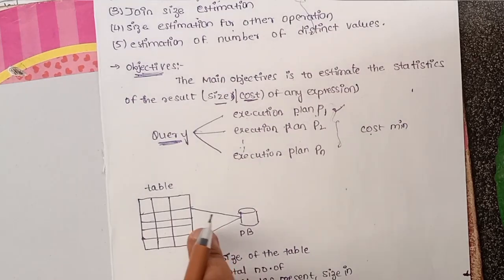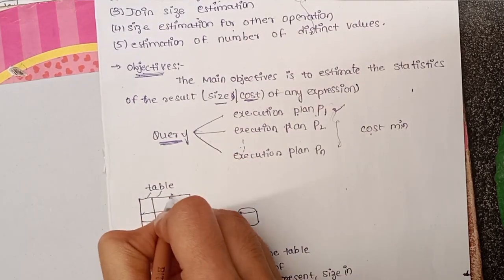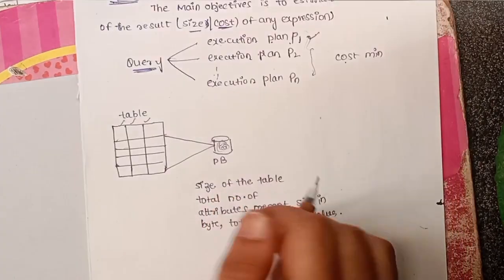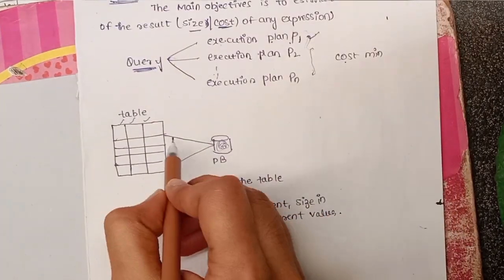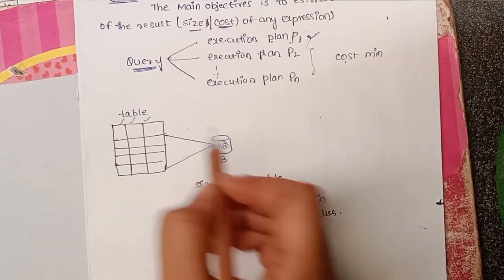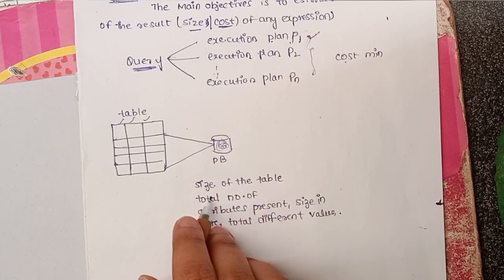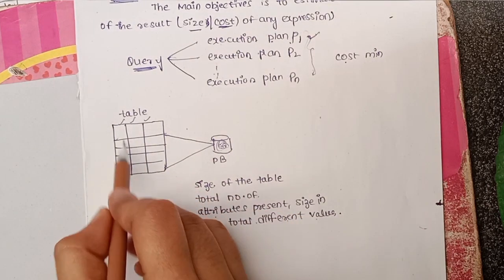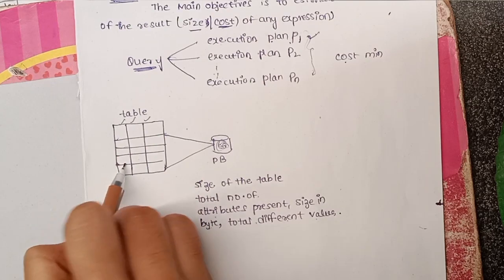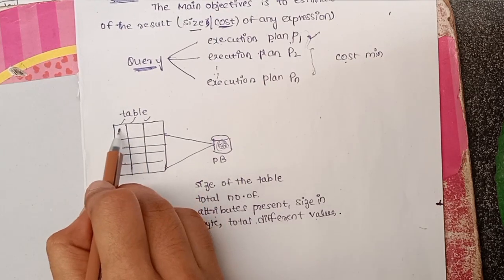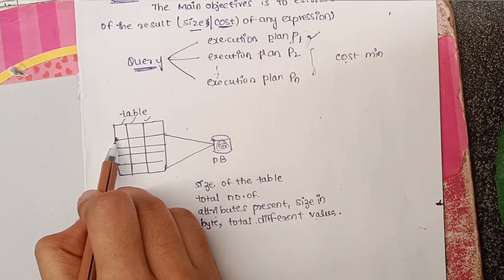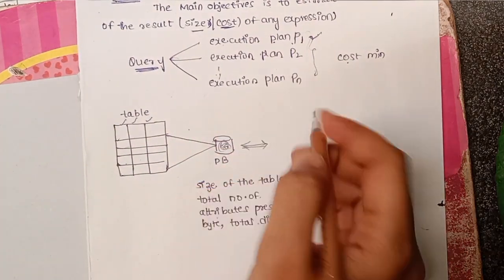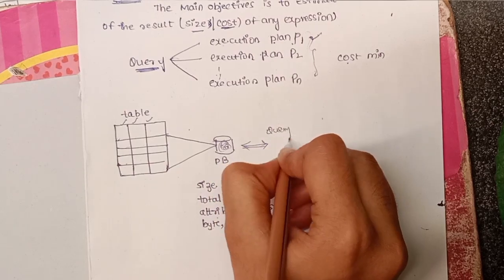There is one table with some attributes, all stored in a database. The database stores statistics of a relation, for example: size of the table, total number of attributes present, size in bytes, total distinct values, and size of the attributes and their total values. All of this is stored by the database through a query optimizer.